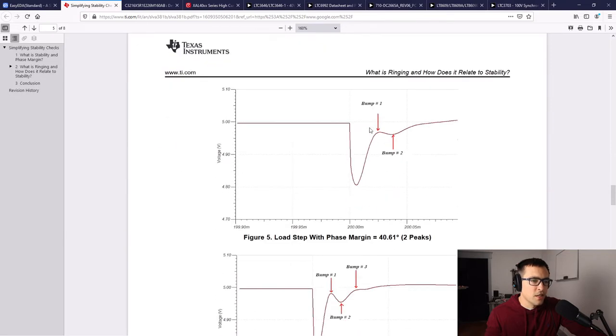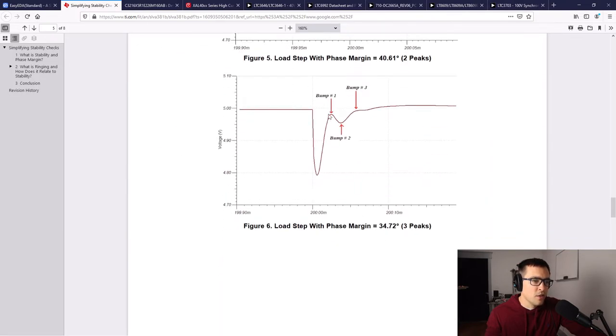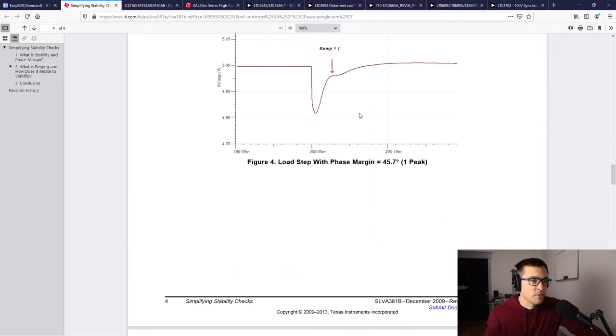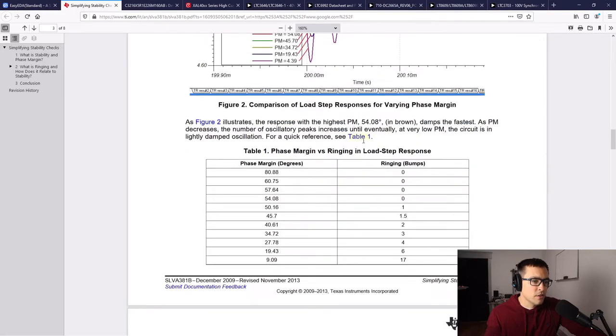This single bump they're calling it is 45 degrees, almost 46. And if you have these two bumps, that's 40 degrees, almost 41. You can see just gradually as the phase margin decreases, you increase the number of bumps or the amount of ringing that you have. As long as we avoid any ringing in the transient response, we're going to have a solid phase margin.